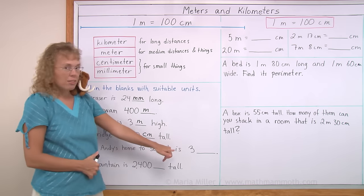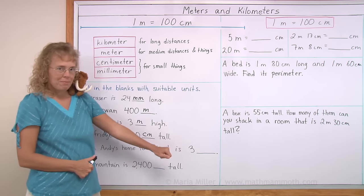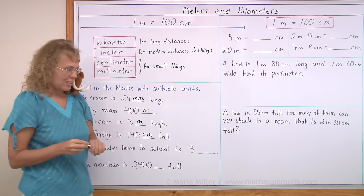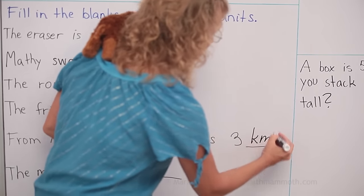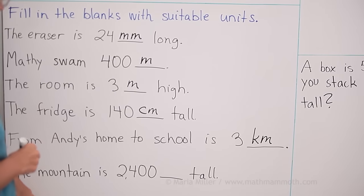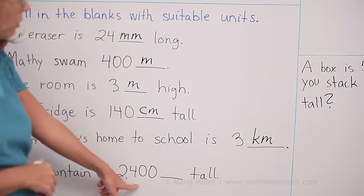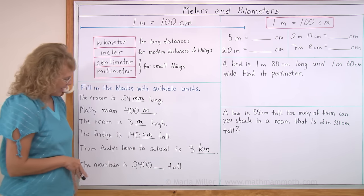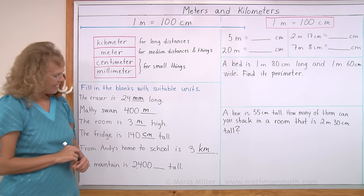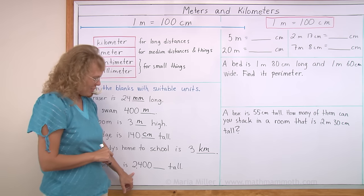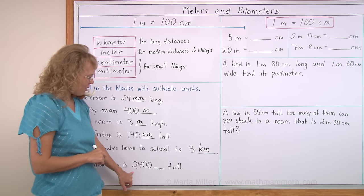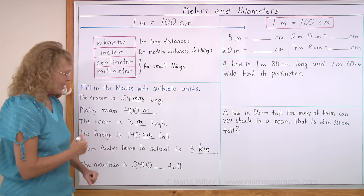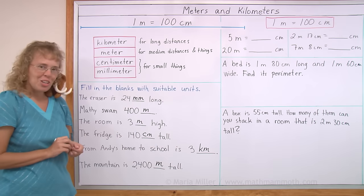From Andy's home to school is three. Now we need to use the unit for long distances, right? Kilometers. And then the mountain is 2,400 tall. Would it be meters or kilometers? Now we don't have mountains that would be 2,400 kilometers tall on this earth. It is meters.